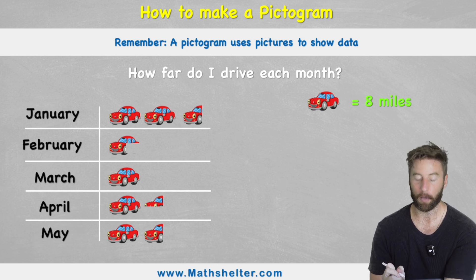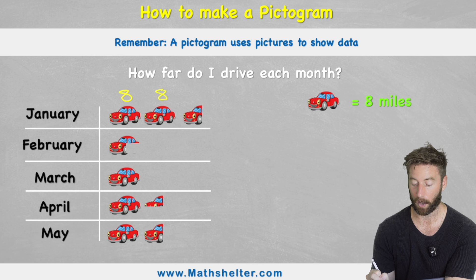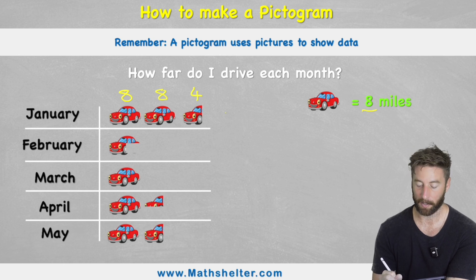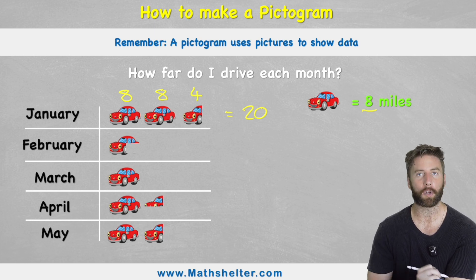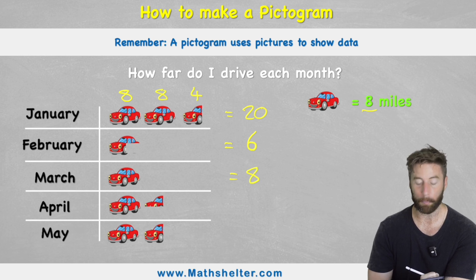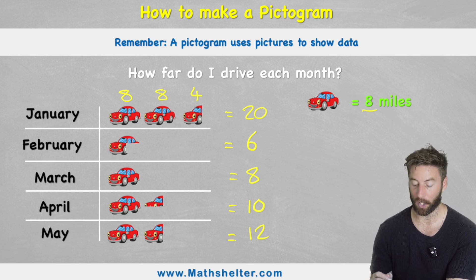In January we can see the first car is eight miles, the second car is eight miles, but the third car is only half a car and half of eight is four. So the amount I travelled in January is eight plus eight plus four, which is twenty miles. In February I've only travelled three quarters of a car — three quarters of eight: half of eight is four, another half of that is two, add them together I get six miles. In March I've only got one complete car, so that's eight miles. In April I've got one complete car and one quarter — a quarter is two miles, so in April I'm travelling ten miles. And in May I have one and a half, so I have twelve miles.